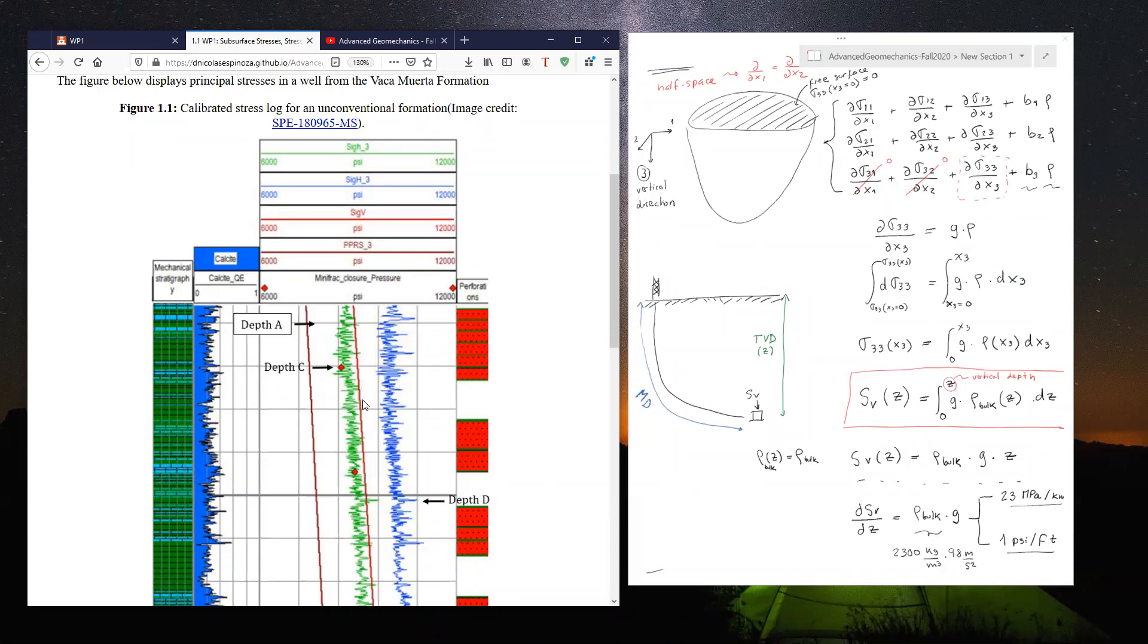because you know distance, at least the change, and you know the absolute value of stress. So you're going to be able to calculate the variation of vertical stress with depth.